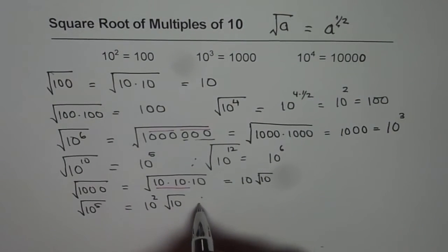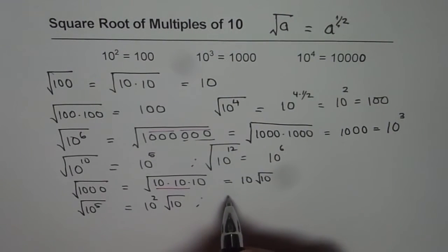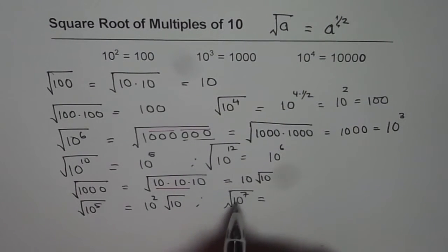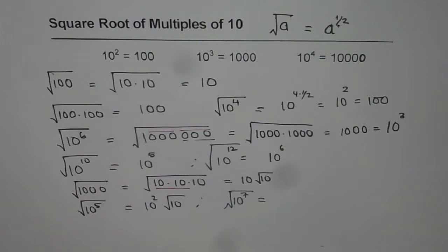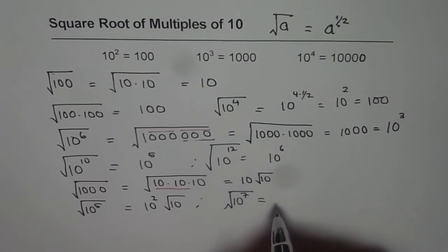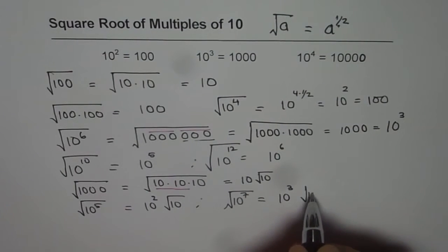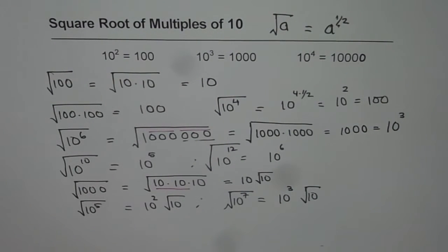Let's try an exercise. Try to find the square root of 10 to the power of 7. What is half of 7? It is 3 and a half — so 3 comes outside and the half remains inside, like this.